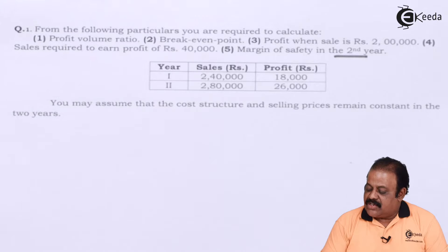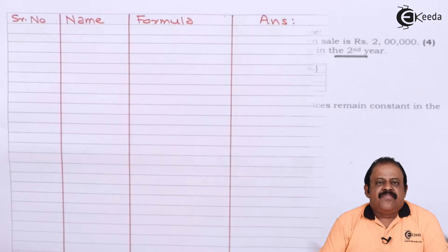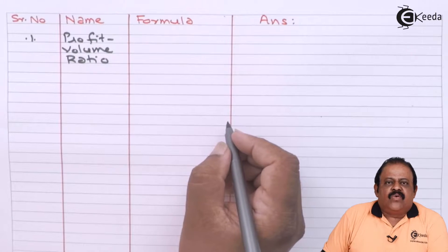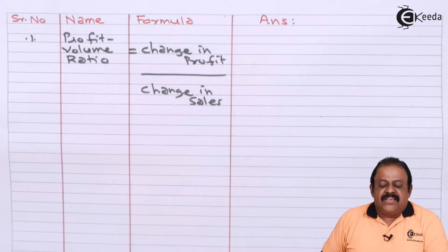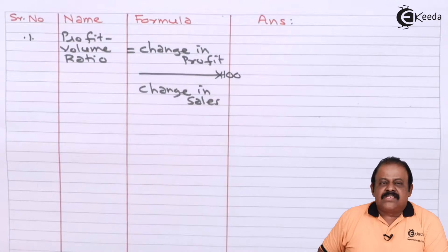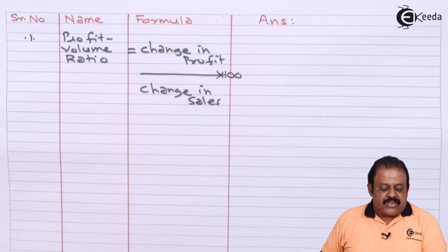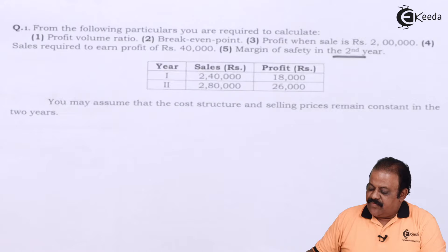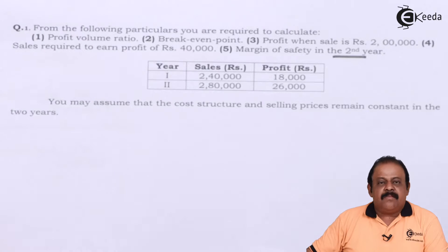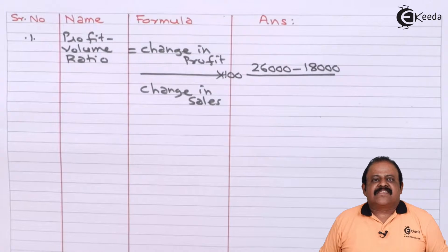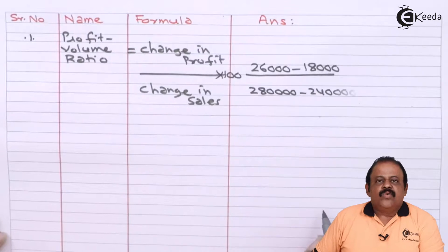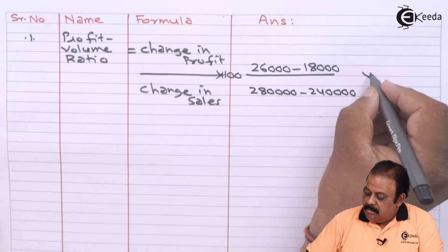First, we will find the PV ratio. The formula to calculate PV ratio is: change in profit divided by change in sales, multiplied by 100. Profit for Year 1 is ₹18,000 and for Year 2 is ₹26,000, so the difference is ₹26,000 minus ₹18,000. The difference in sales is ₹2,80,000 minus ₹2,40,000. We multiply by 100.